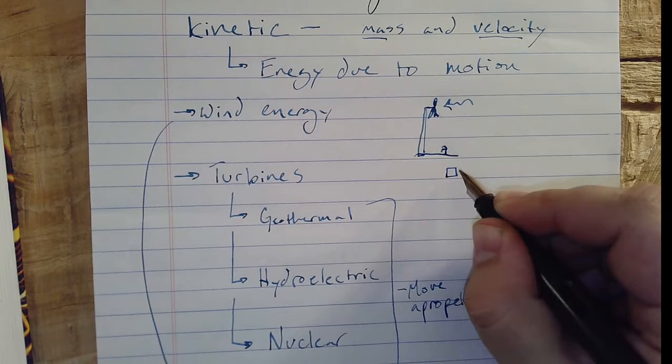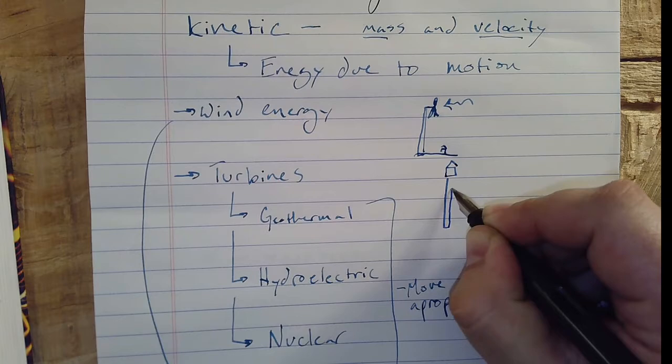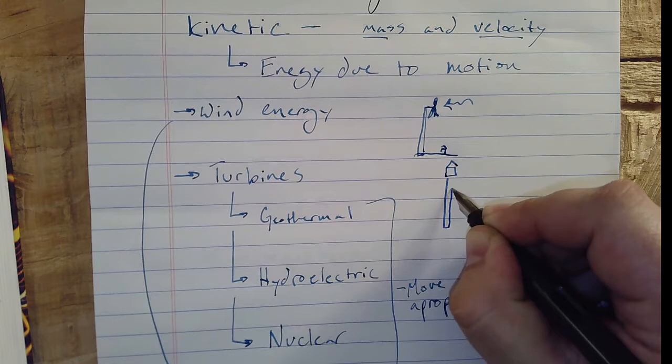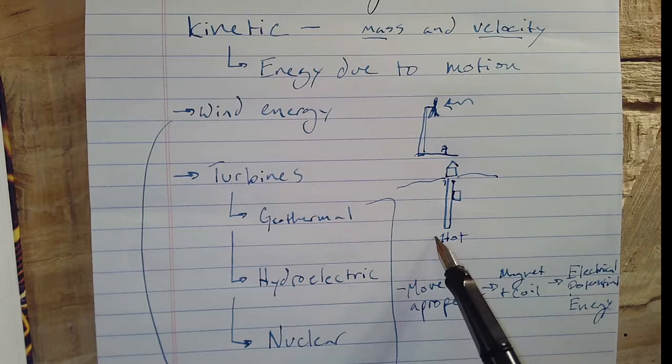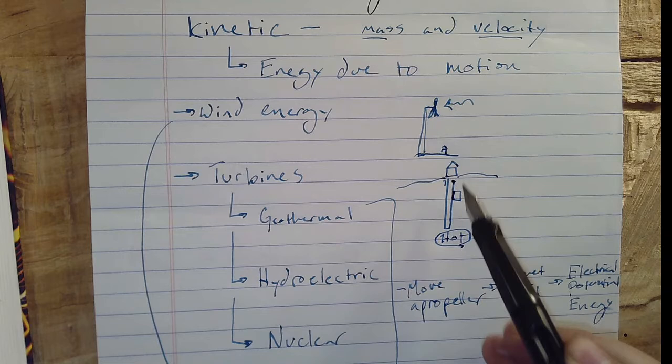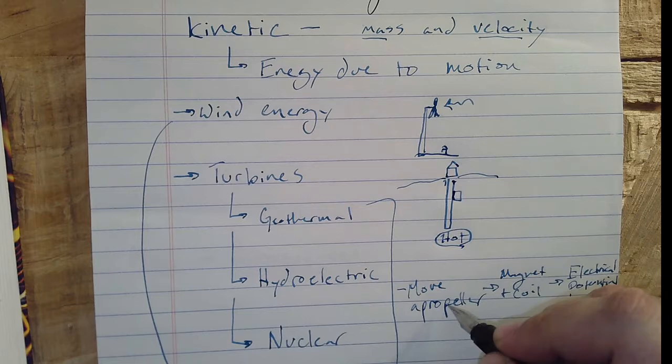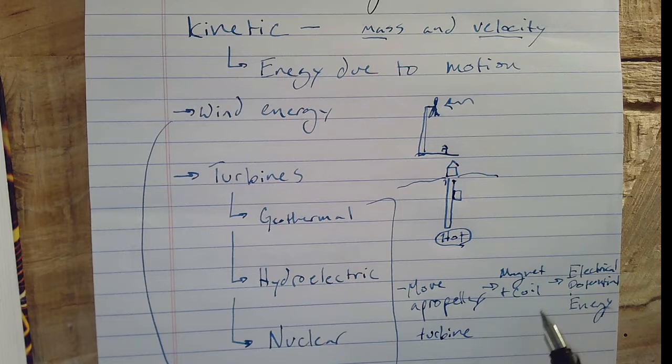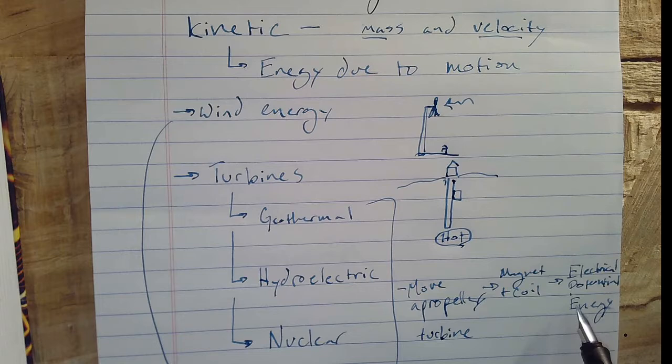Geothermal energy - what you have is here's your house, and then you have a big water pump that's basically going down deep into the earth. The inside of the earth is hot. So you have to go deep enough that there's a temperature difference, and that's going to cause a fluid to move and then move basically a propeller or a turbine that then is again moving around a magnet and a coil and changing that to electrical potential energy.